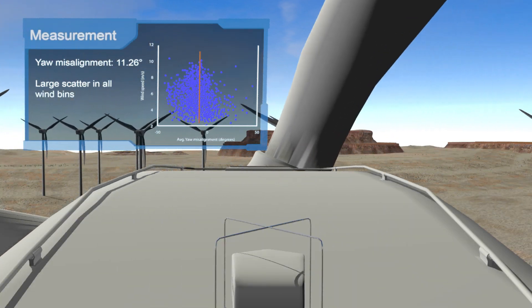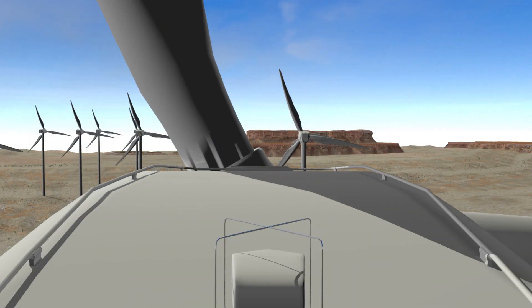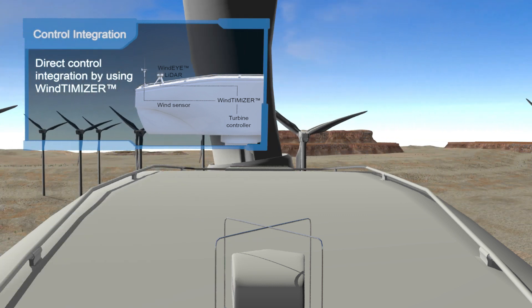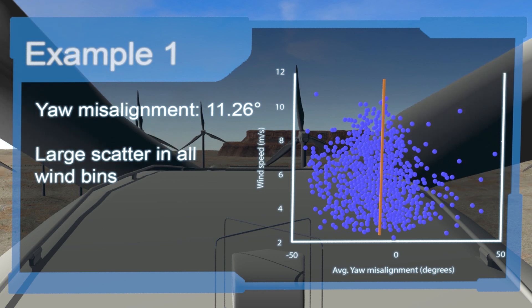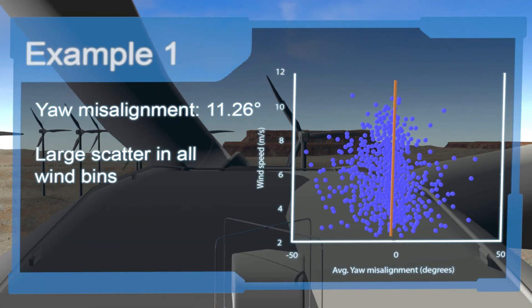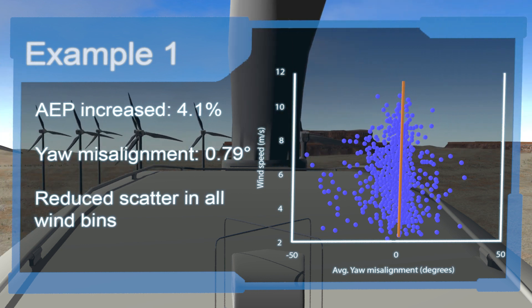The wind timizer solution facilitates the integration between the lidar and the wind turbine controller. The wind timizer functions as a mediator between the wind turbine controller and the lidar, without the necessity of actually altering anything in the wind turbine controller.